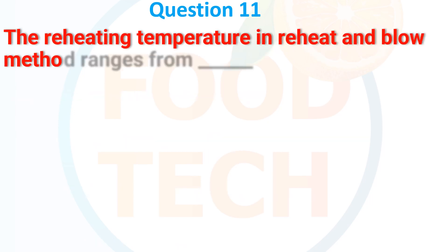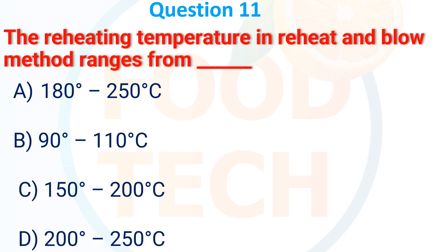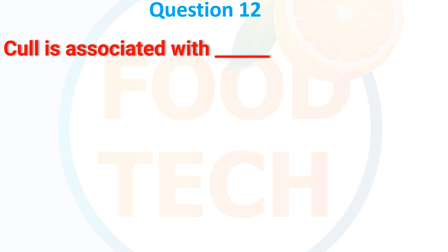The reheating temperature in the reheat and blow method ranges from: (a) 180 to 250 degrees Celsius, (b) 90 to 110 degrees Celsius, (c) 150 to 200 degrees Celsius, (d) 200 to 250 degrees Celsius. The answer is (b) 90 to 110 degrees Celsius.